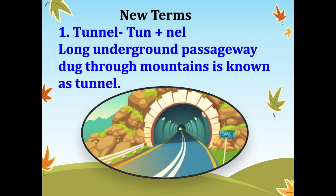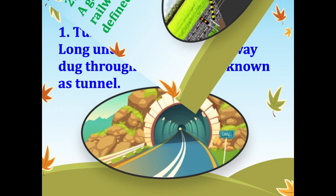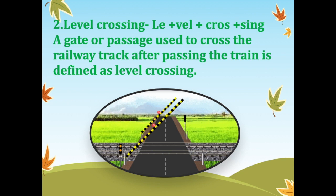Let's recall some of the new terms we have learnt in this chapter. First: tunnel — a long underground passage dug through mountains is known as a tunnel. Second: level crossing — a gate or passage used to cross the railway track after the train has passed is defined as a level crossing.